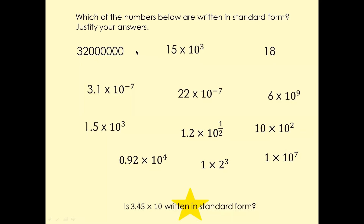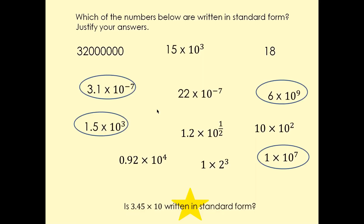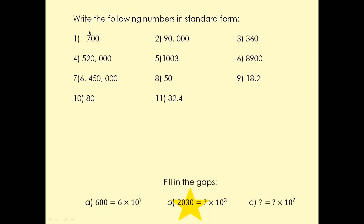Now have a look at these examples — some questions for you. Pause the screen, take your time, do them, and then we'll mark them in a minute. Looking at the answers: give yourself a tick or a cross. Those numbers are all in standard form. Now write the following numbers in standard form — pause the screen, give it a go, and we will discuss the answers in a minute.